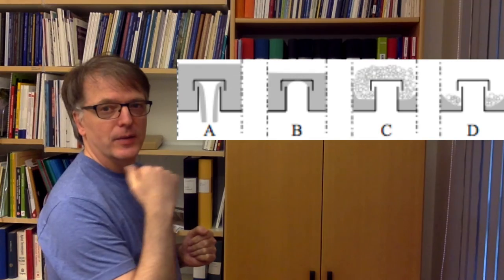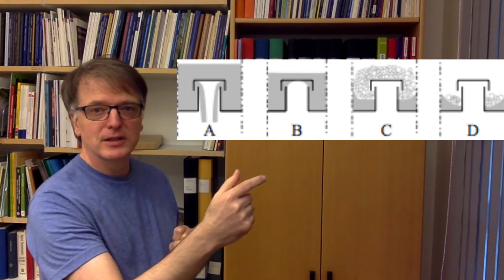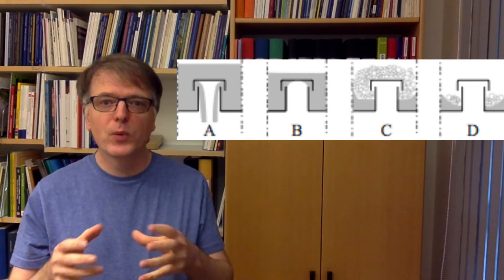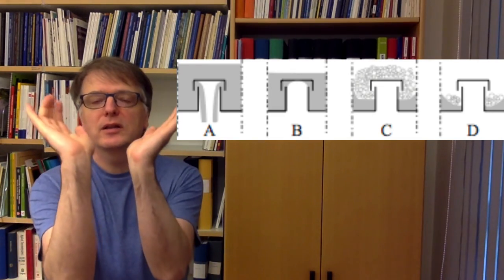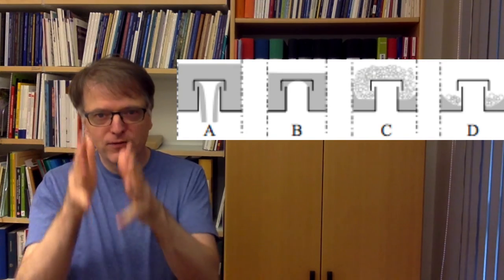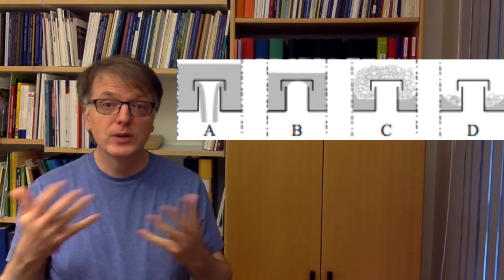If you consider this bubble cap tray here you see different bubble caps here and A there is when you have backflow through one of the bubble caps. So the gas flux isn't enough to push away the liquid so the liquid takes the wrong way and is falling down. That's called weeping, like when you weep.